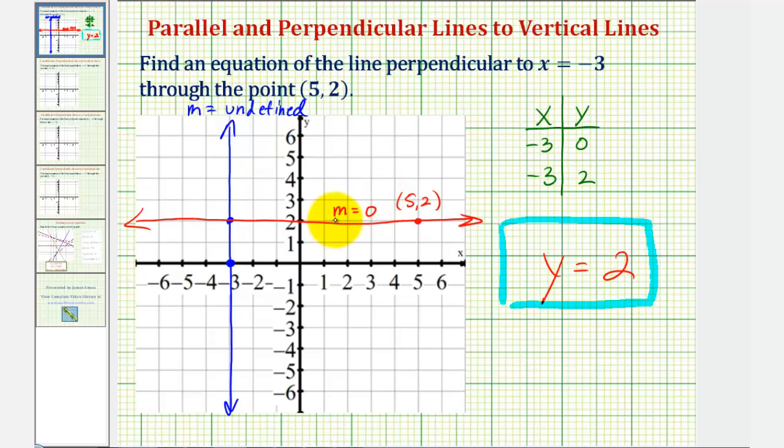When we have two lines where one has an undefined slope and one has a zero slope, they will always be perpendicular.